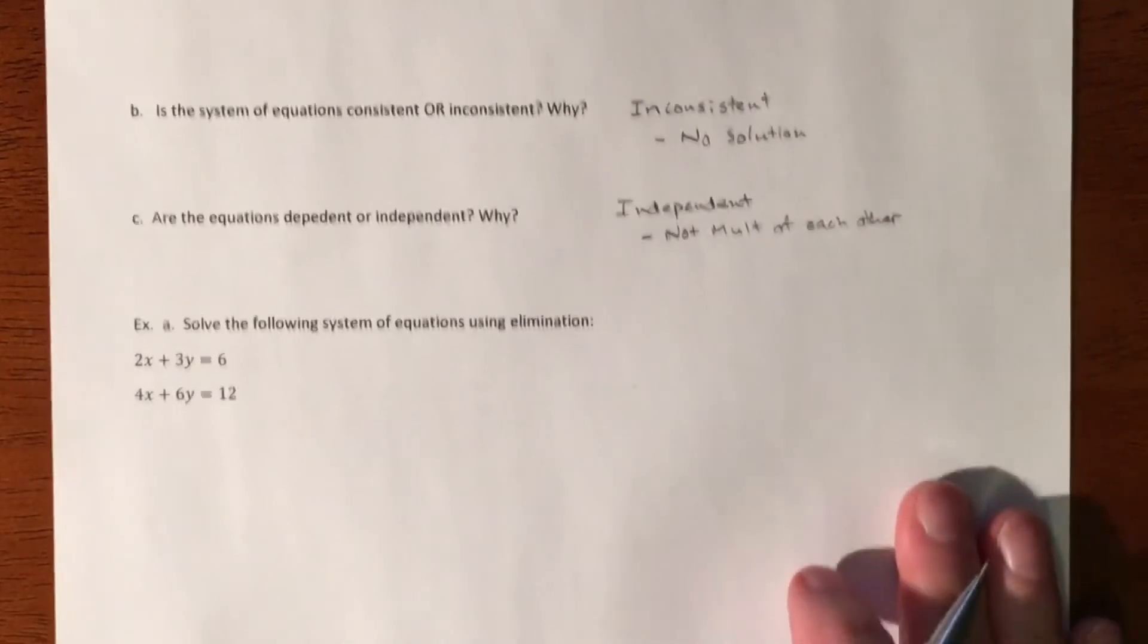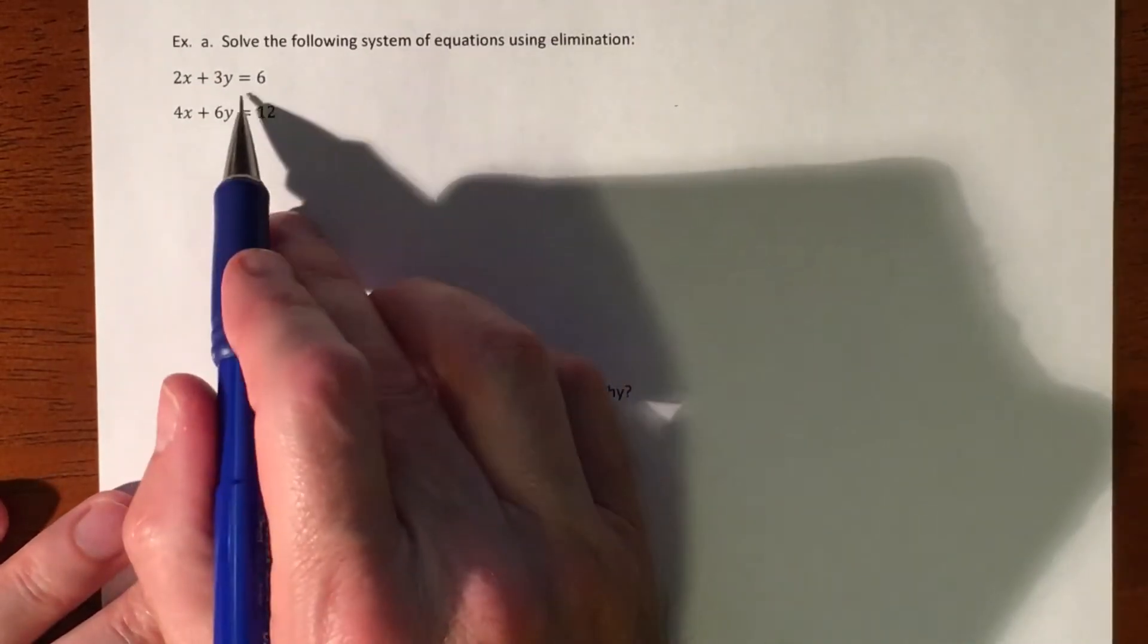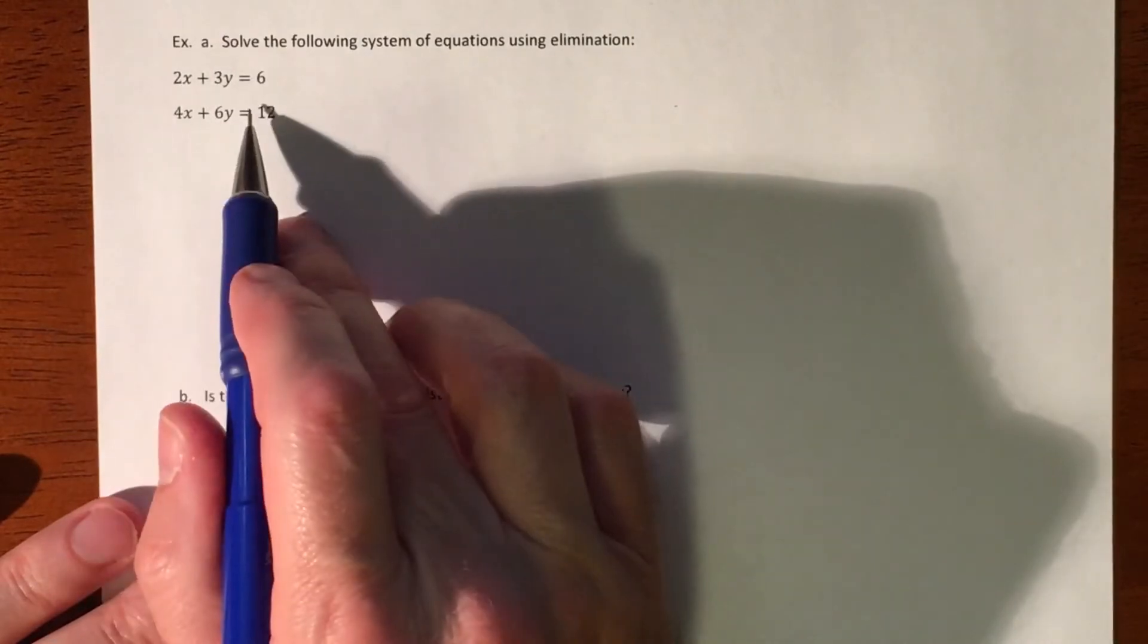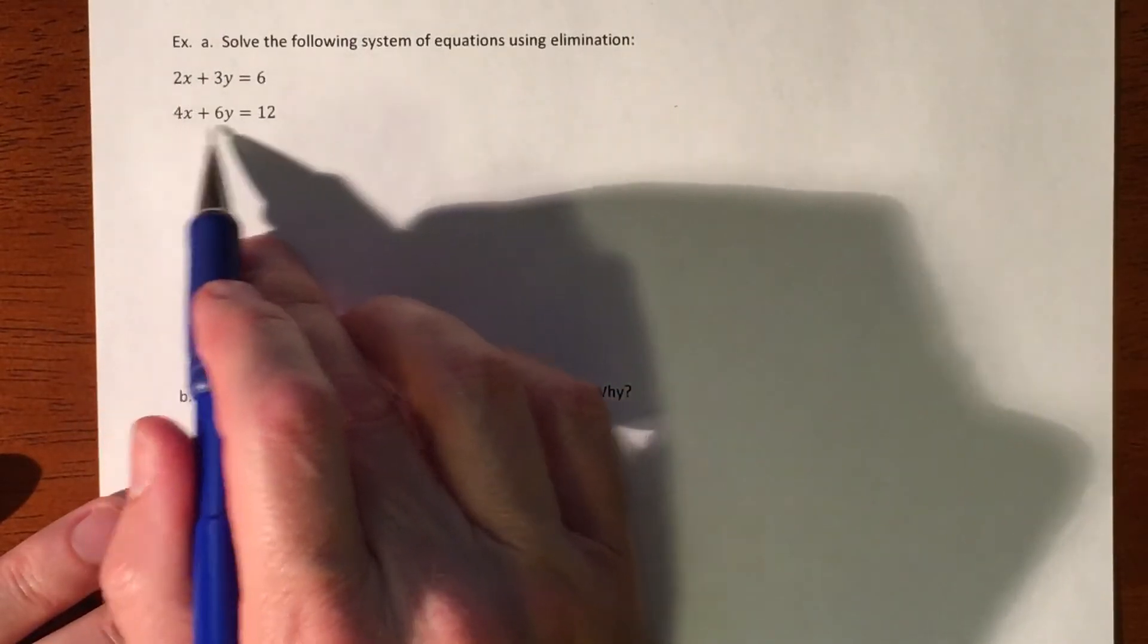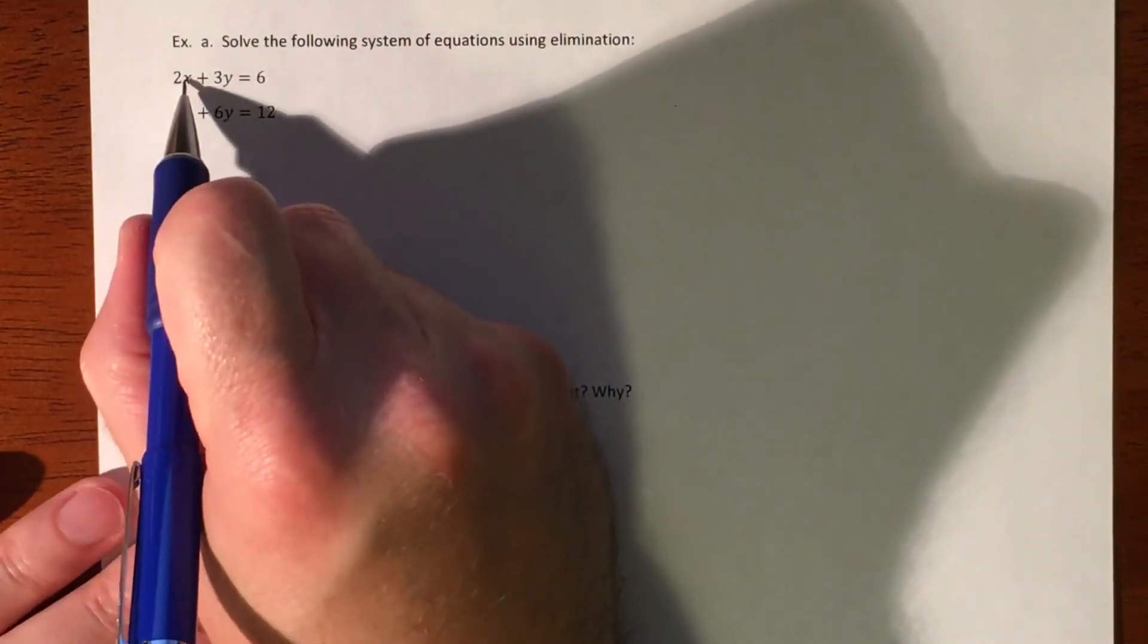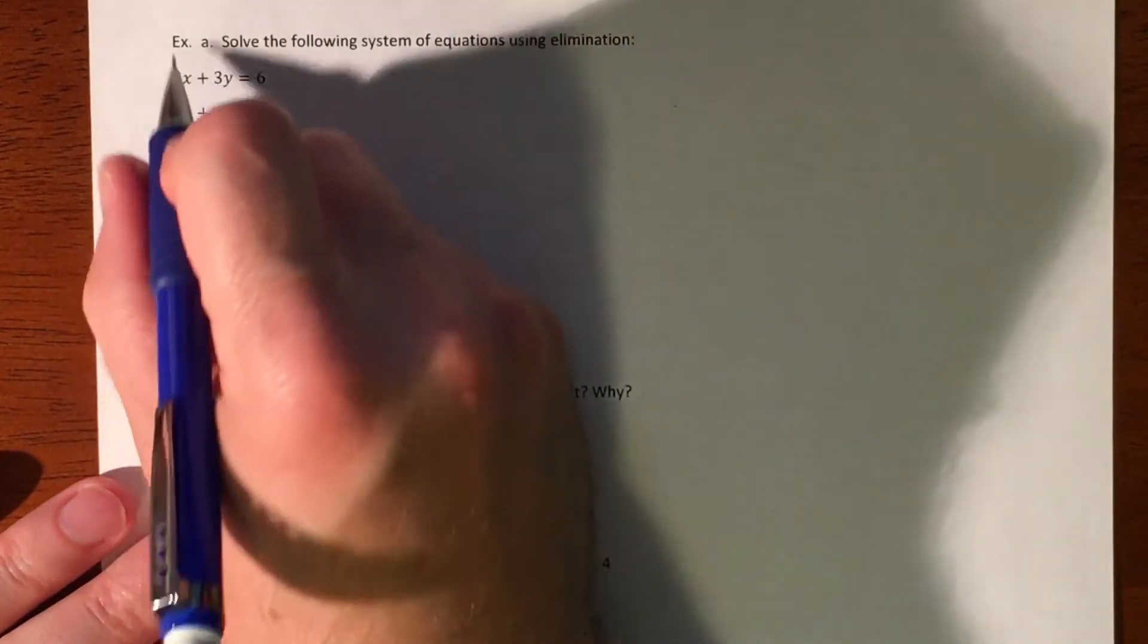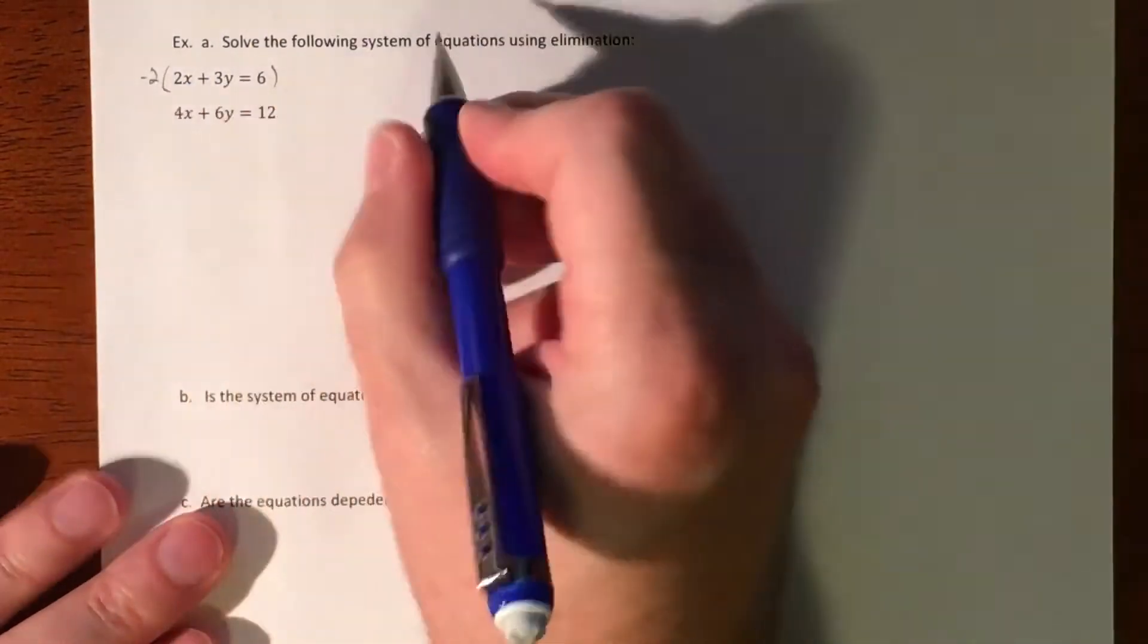We'll jump into the next one. This one is suggested for elimination, and I would totally use elimination. I'm going to try and cancel out one of my variables. Let's do the x's, they're a little smaller. So I'm going to multiply this equation by negative two.